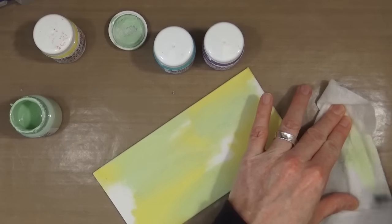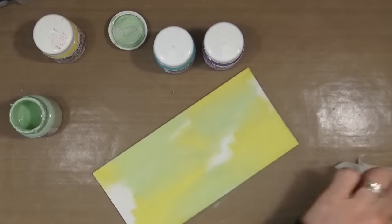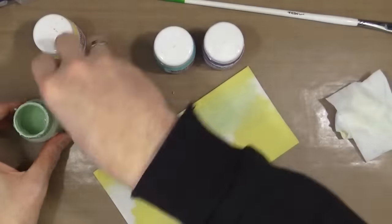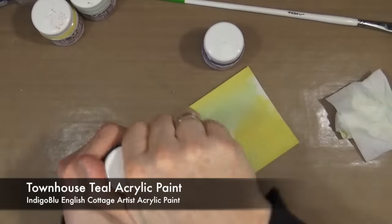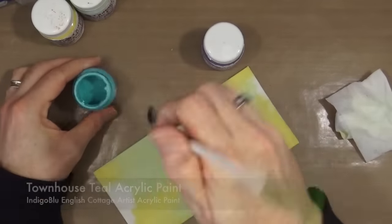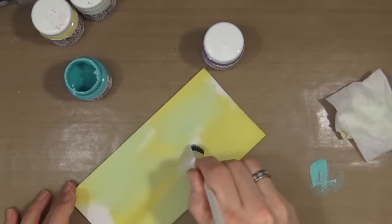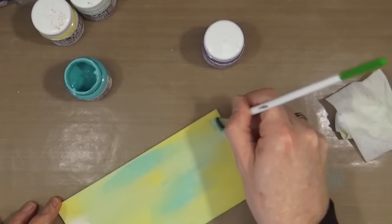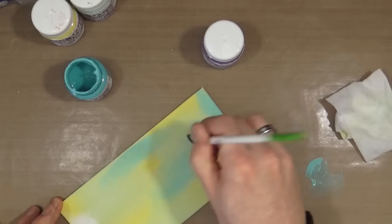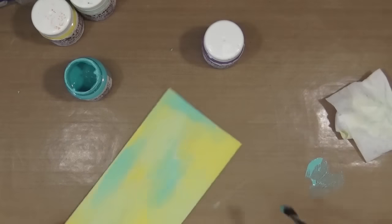As you can see, I'm just cleaning off the brush onto a baby wipe. I'm not even bothering to rinse the brush out in water. This is the Townhouse Teal, one of my favorite colors from Indigo Blue. I'm just literally dry brushing these colors on—I'm hardly using any water at all.